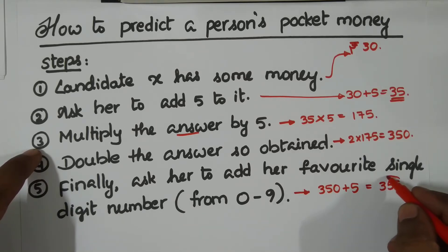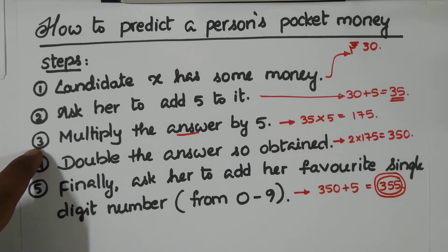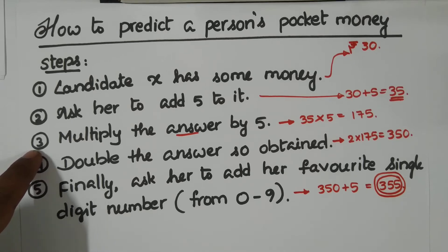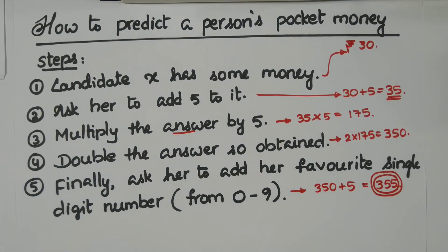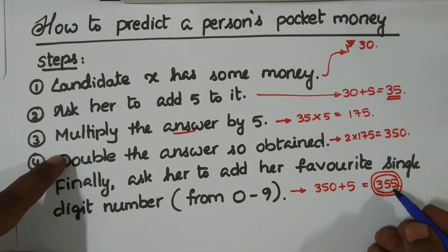Now finally she will tell you this answer. From this answer, you can apply your techniques to predict that person's pocket money. From this answer obtained, let me take this 355.